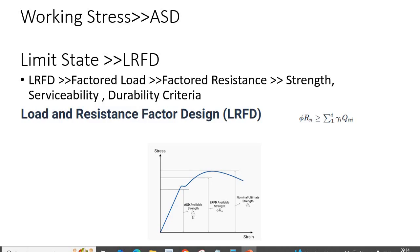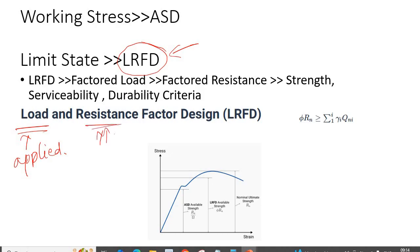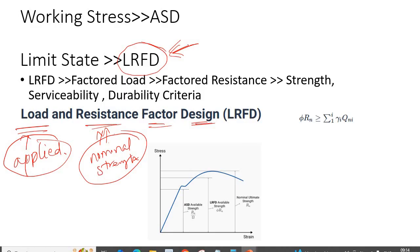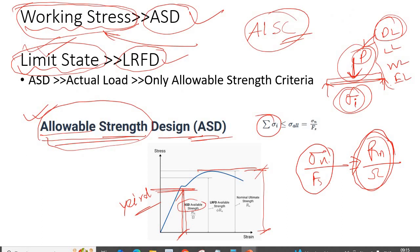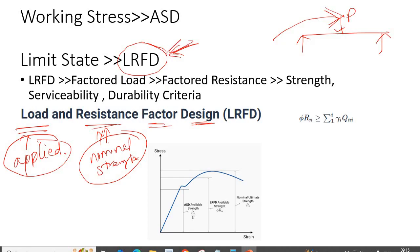Now, what is LRFD? From the abbreviation, LRFD stands for Load and Resistance Factor Design — where 'load' means the applied load, 'resistance' means the nominal strength of the material, and 'factor design' means we apply factors to both. In this method, we use a factor with the applied load and a factor with the nominal strength. In LRFD, you have different types of criteria: strength criteria, serviceability criteria, and durability criteria.